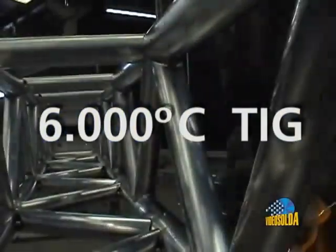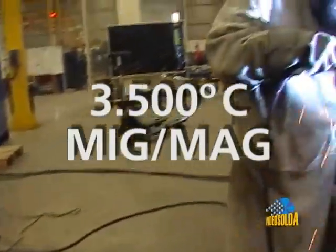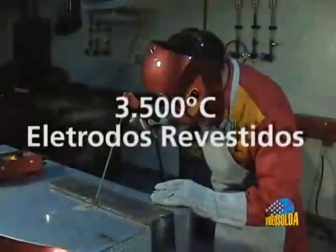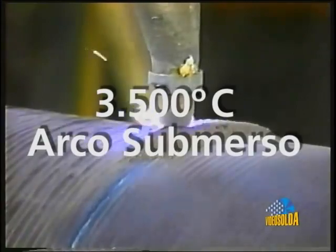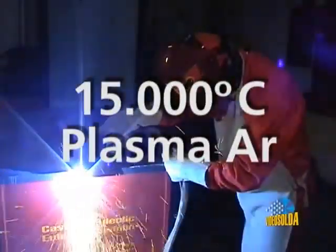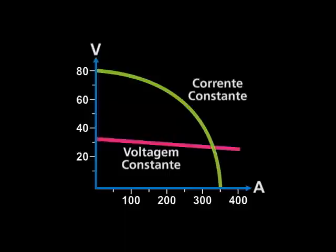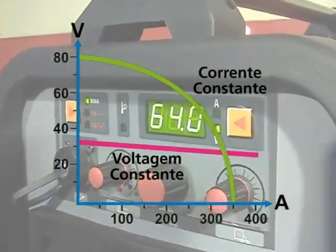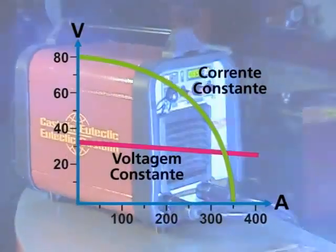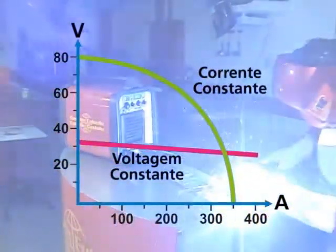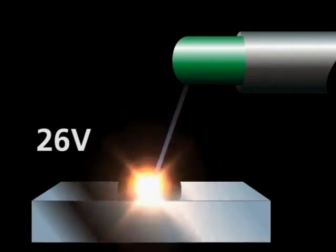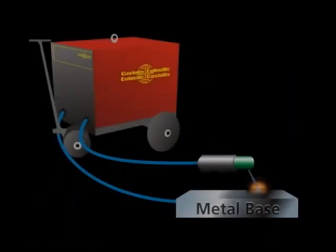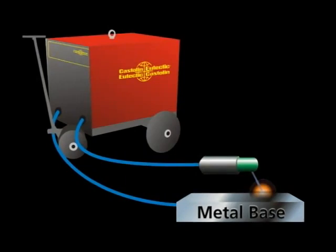Vários processos de solda e corte utilizam energia elétrica como fonte de calor para a fusão de metais. A energia elétrica possui duas grandezas básicas: tensão, expressa em volts, e corrente, expressa em amperes. Para que a corrente elétrica circule, é necessário aplicar tensão em um condutor. Os metais, em sua maioria, são considerados bons condutores.